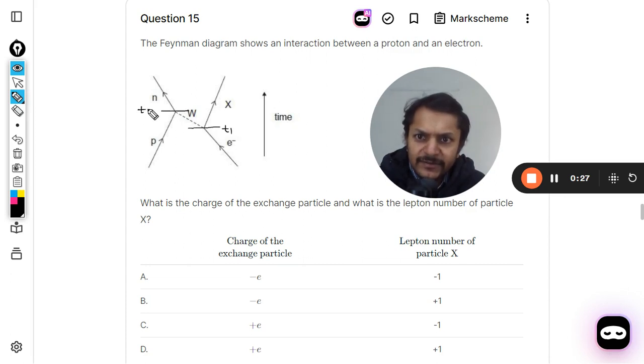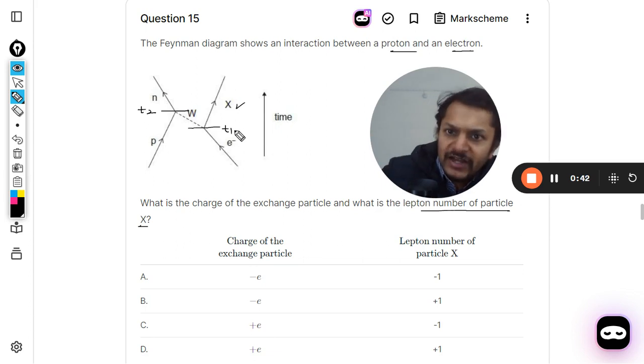So this event is happening first and this event is happening later. This is an interaction between proton and electron. What is the charge on the exchange particle and what is the lepton number of the particle X? So you need to comment on the lepton number of X and the charge on W.